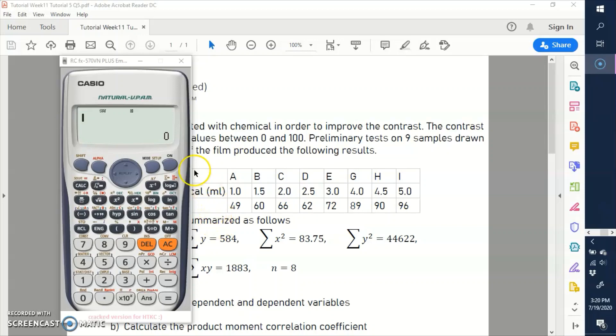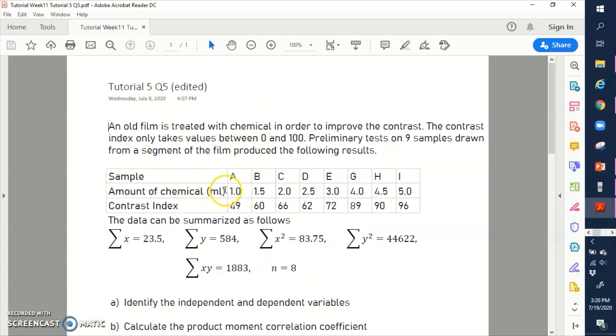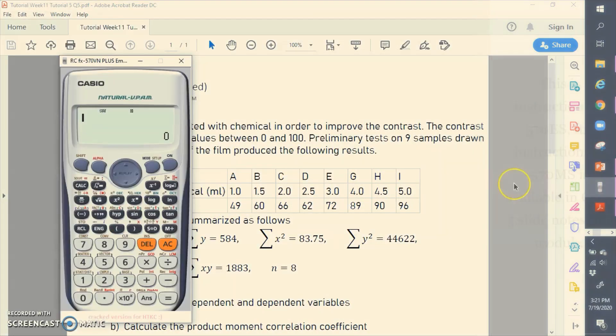Okay, so I'm going to use this data from tutorial 5, question 5. In this data here we can see the amount of chemical is the independent variable which is our x, and the contrast index is our dependent variable which is our y.